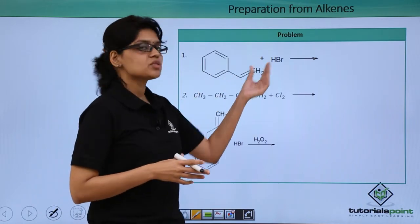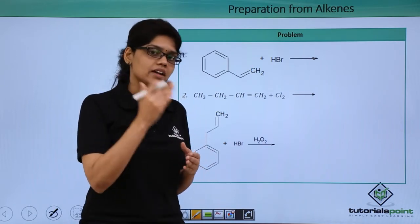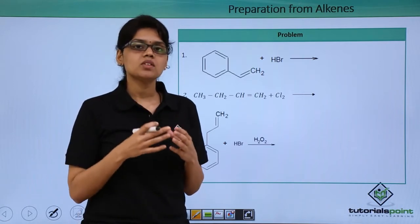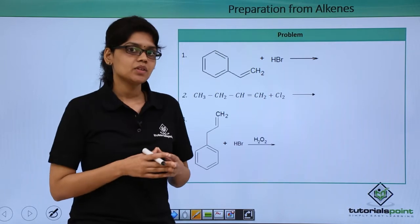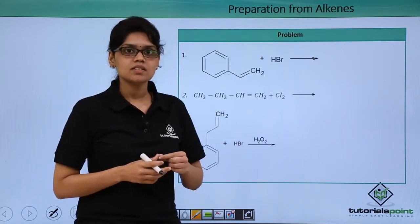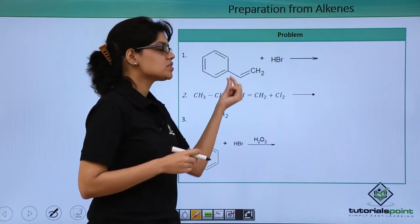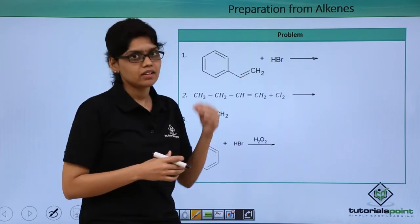Here we have an alkane to which HBr is being added. So we know that when a hydrogen halide is added to an alkene system, the final product or the major product obtained will be according to Markovnikov's rule of addition. That is, we know that the first step involved in this is nothing but the formation of carbocation, and the pi bond can shift in such a way that the most stable carbocation obtained here will be a secondary carbocation.